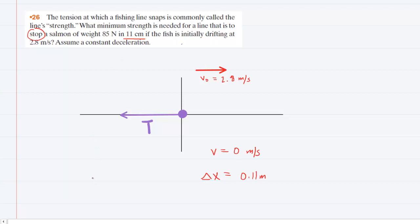What we're going to need is the acceleration of the fish in bringing it to rest. We may recall from one-dimensional kinematics that the final velocity squared is equal to the initial velocity squared plus two times the acceleration times the displacement.